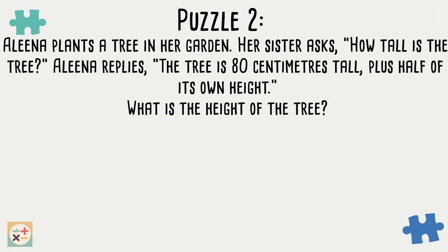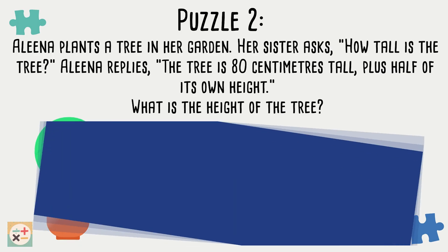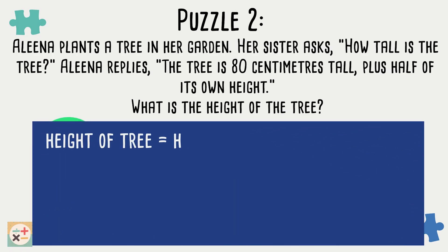For puzzle 2, we will use the variable h to represent the height of the tree. The height equals 80cm plus half of the height.